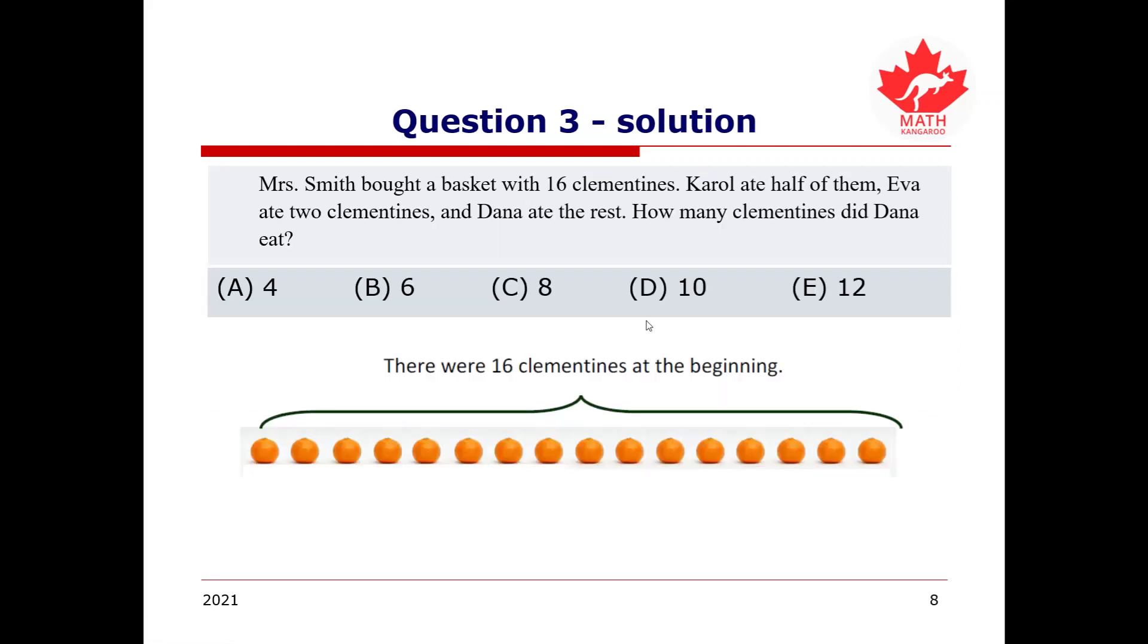So, to figure out how many clementines Dana ate, we first start with 16 clementines, and then we're going to divide these 16 clementines into two equal groups. This means that we have eight clementines in each group, as we can see. One, two, three, four, five, six, seven, and eight, and then eight over here as well. One, two, three, four, five, six, seven, and eight. So, since Carol ate half of the 16, this means Carol ate eight of the clementines, as we can see here. And so, we can ignore these eight clementines, as we know that they are gone.